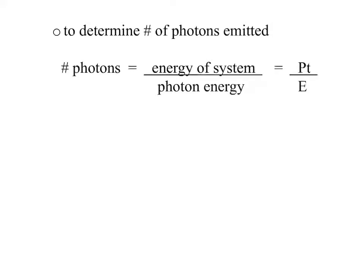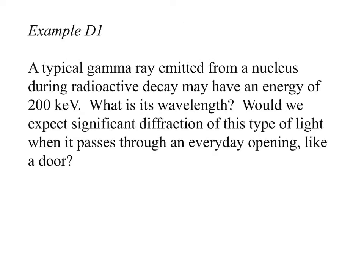If you want to determine how many photons are being emitted, you just take the energy of the whole system and then divide it by the photon energy of just one. So if I want to know the energy of all the red light being shot at something, then I take just the energy of all that divided by the energy of one red photon and I can get the number of photons that are being emitted in a certain timeframe.